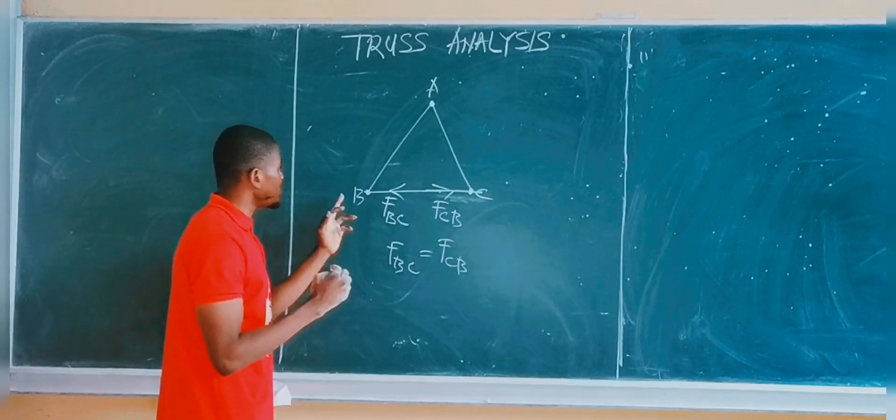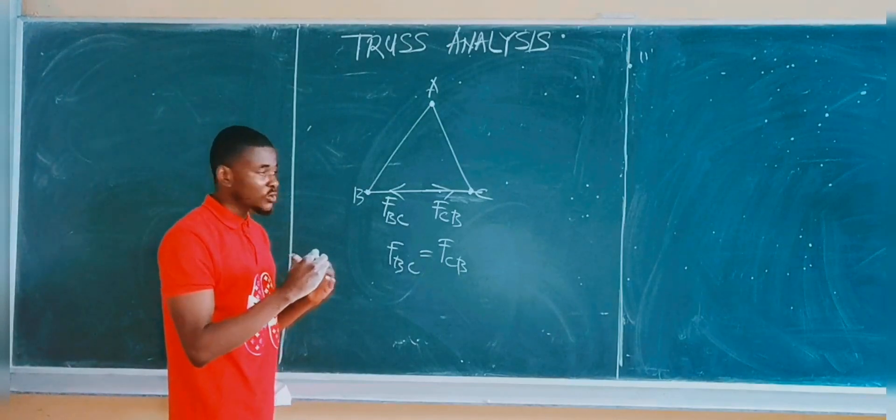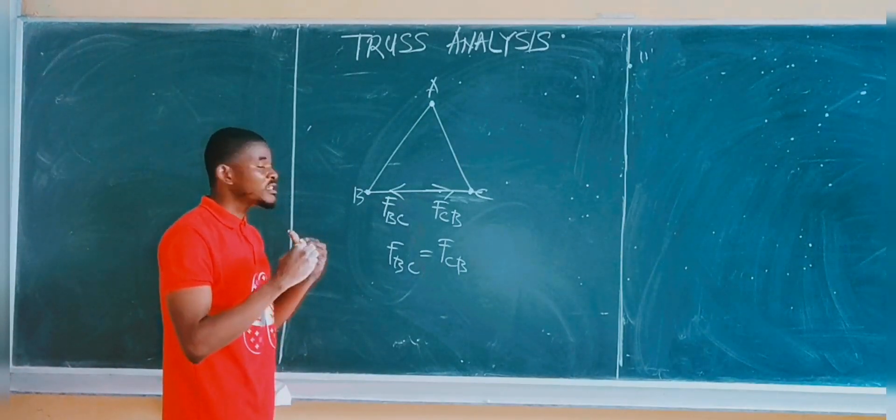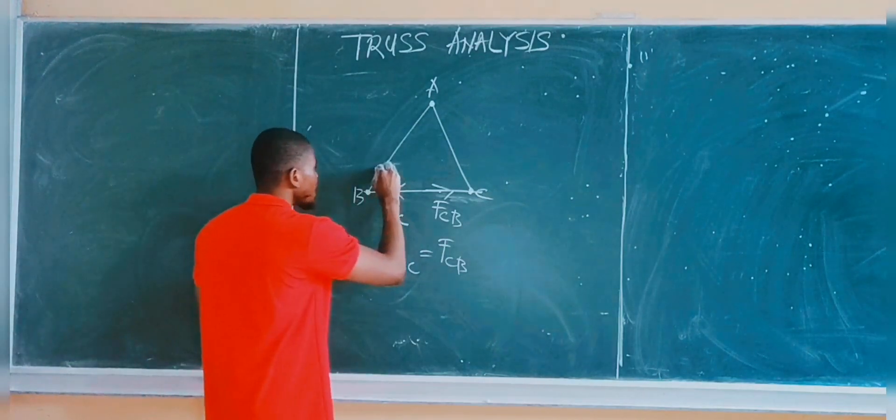Let's also consider member B to member A. Now let's say this time around, the force is in tension. If it is in tension, it means the force is pulling out of the joints.